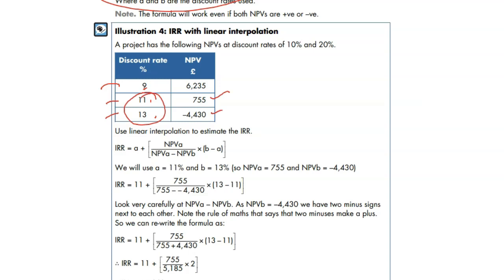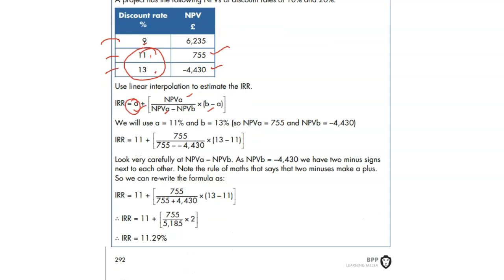How do you do it? What is the formula? A plus NPV A over NPV A minus NPV B times by B minus A. Now, I said A is positive percentage. This is our positive. This is our negative. Well, so positive percentage is 11%. Negative percentage is 13%. Positive A means positive value, this 755. And NPV B, which is negative value, which is 4430.